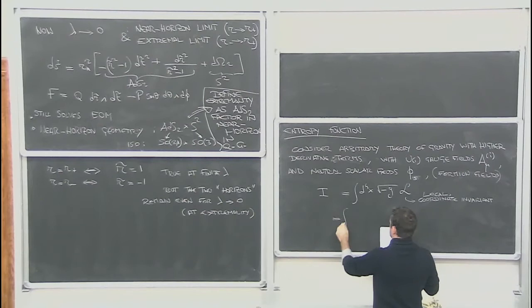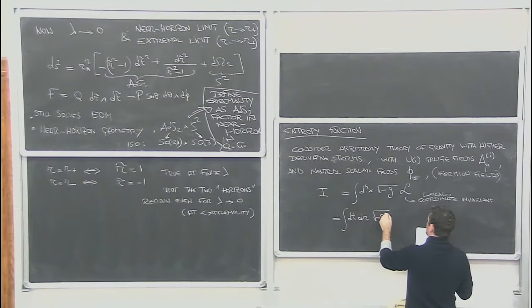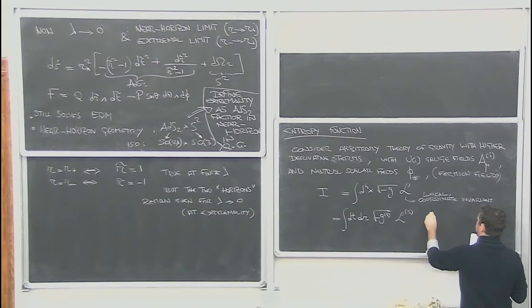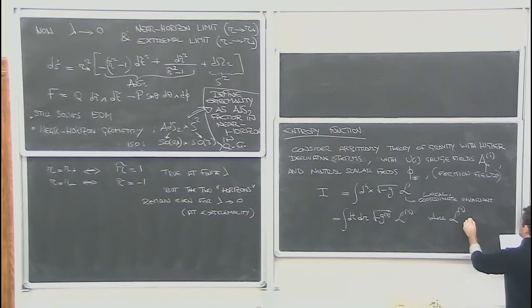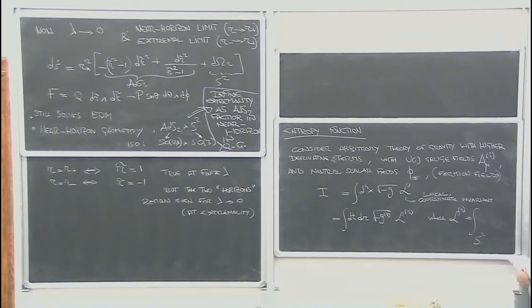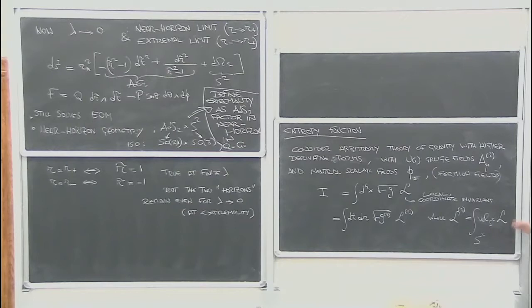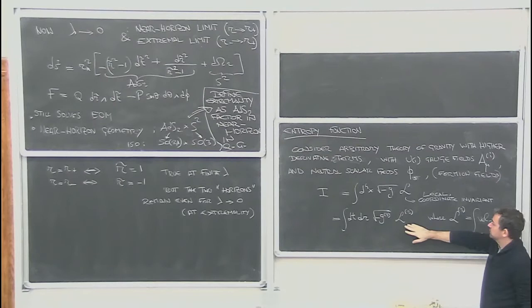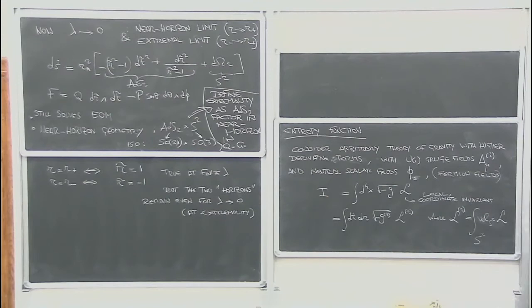All the possible modes correspond to one field in 2D, so I have an infinite number of fields because I have an infinite number of harmonics. We can also think about this in this way. The same action is the integral over dt and dr of the square root of minus G2, the two-dimensional metric, times L2. Where L2 is a two-dimensional Lagrangian defined as the integral over the compact space S2 of the full Lagrangian. This 2D Lagrangian contains an infinite number of two-dimensional fields.